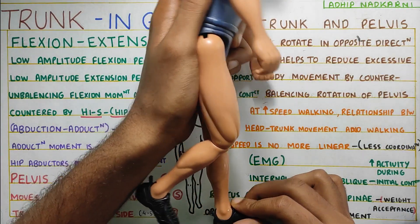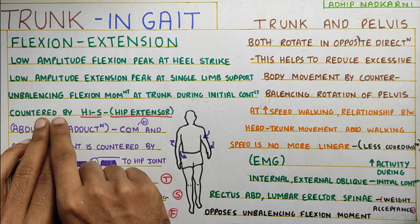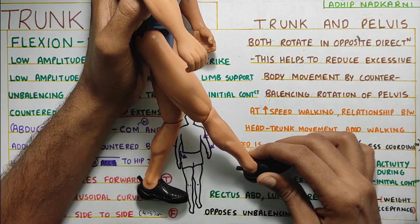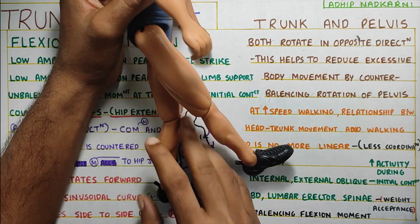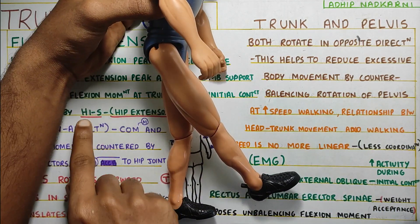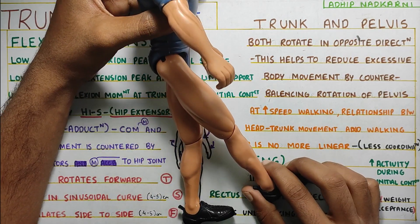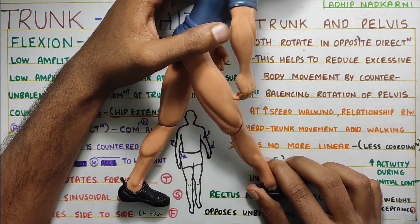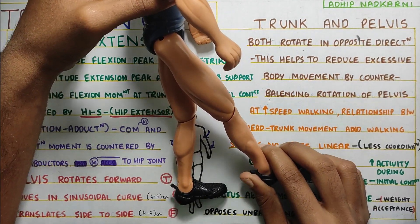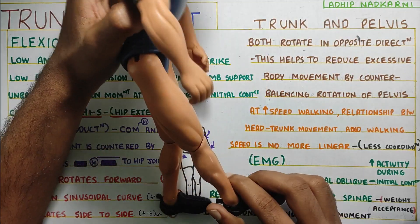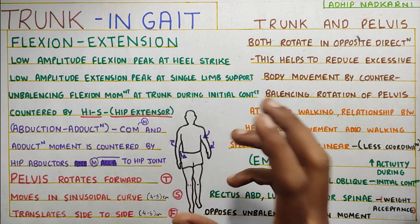This combination of flexion and extension — the unbalancing flexion moment at the trunk during initial contact — is countered by H1S, that is the hip extensors. As we saw, H1S is the activity seen at the hip joint by the glutes. When hip flexion and heel strike are happening, the trunk goes into flexion, and this sudden unbalancing flexion moment is controlled by the hip extensors, which smooth out the sudden forward movement into a nice, controlled gait. H1S is a very important part here, evening out excessive movements and smoothing gait.